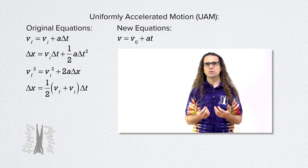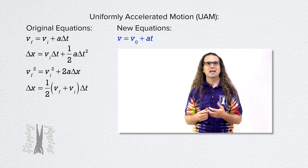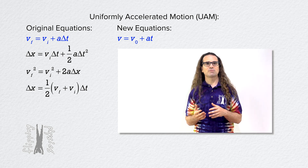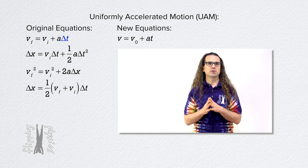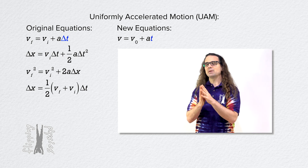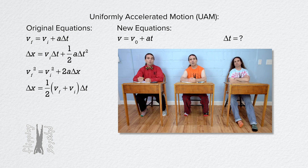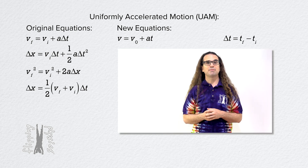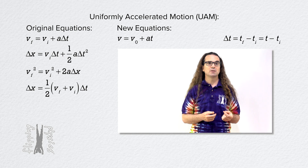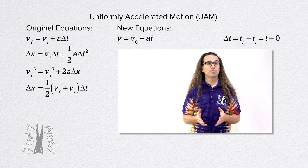There are many differences between this first UAM equation and our original first UAM equation. Let's begin by looking at how we have replaced change in time with just the variable time. What does change in time equal? Change in a variable always equals final minus initial. So change in time equals time final minus time initial. Now we replace time final with the variable time with no subscript, and we assume the initial time is zero. Therefore, change in time equals just the time variable.